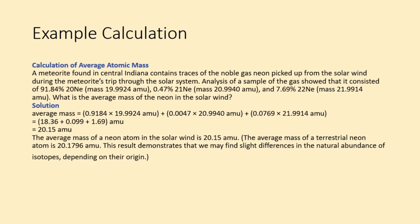Solution: average mass equals 0.9184 times 19.9924 amu plus 0.0047 times 20.994 amu plus 0.0769 times 21.9914 amu equals 18.36 plus 0.099 plus 1.69 amu equals 20.15 amu. The average mass of a neon atom in the solar wind is 20.15 amu.